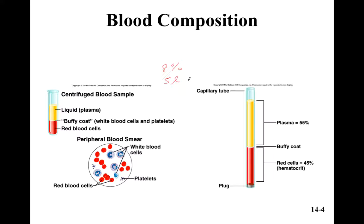You can see that most of the blood is plasma, and then you have the red blood cells, which make up about 45 percent. A very small portion that we call the buffy coat is white blood cells and platelets.